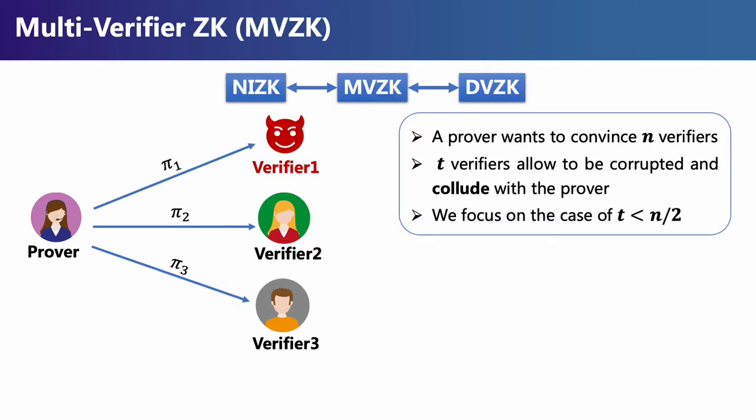We attempt to explore the middle ground between NIZK and DVZK. Particularly, we study the efficiency of ZK proofs when a prover wants to convince multiple verifiers — that is, NVZK.